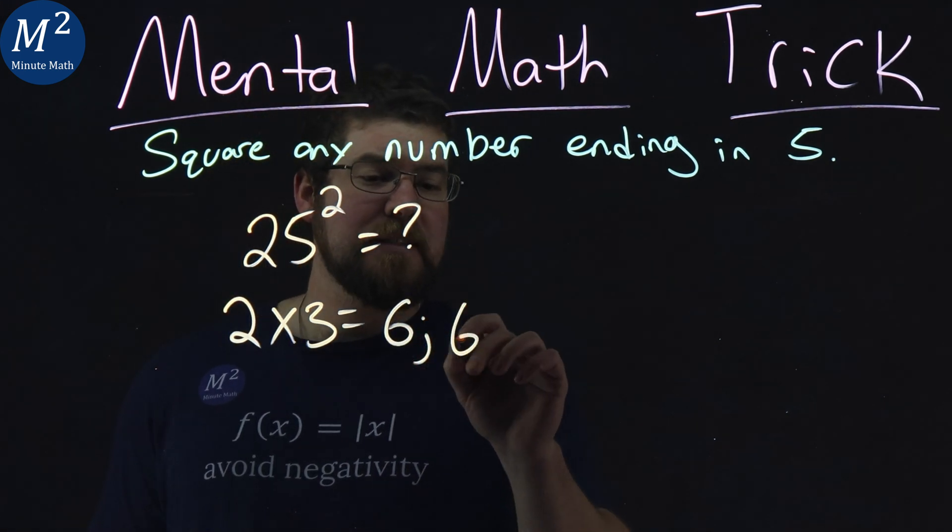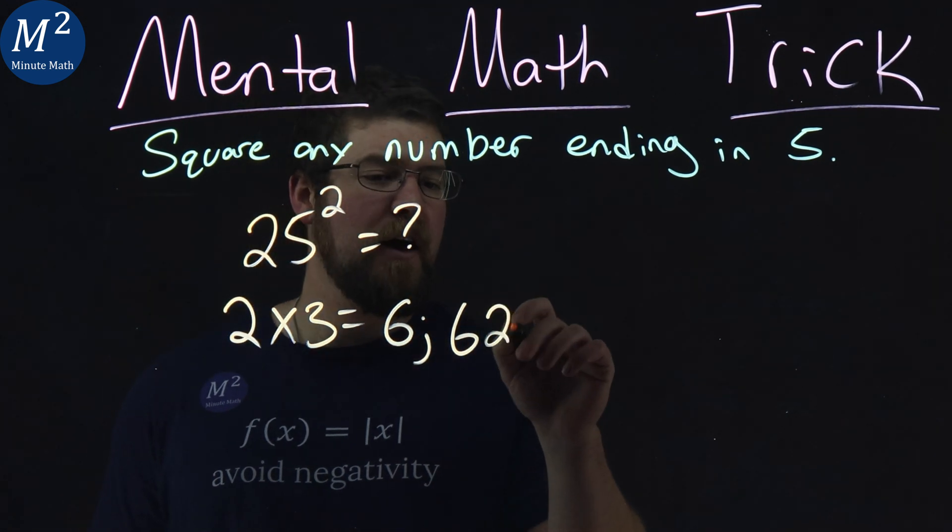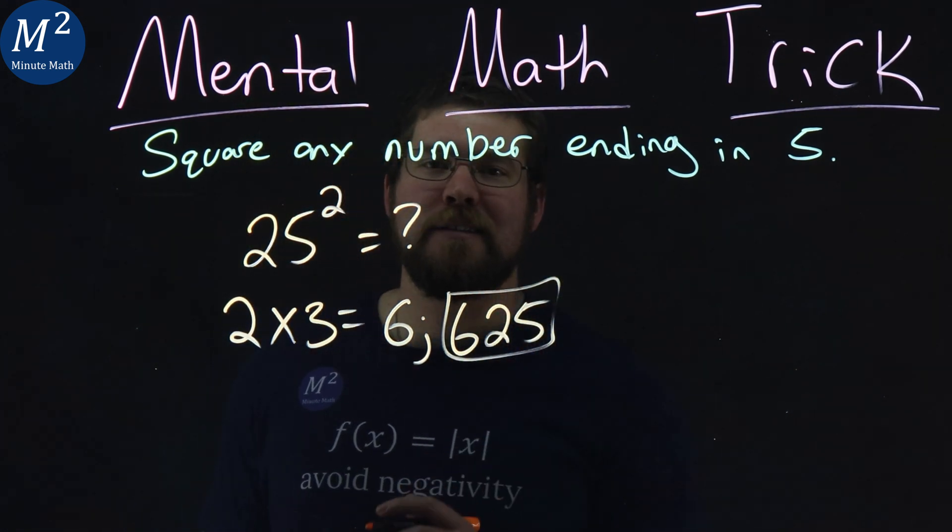Then from there, we take that 6, add on 5 squared, which is 25, and there is our answer.